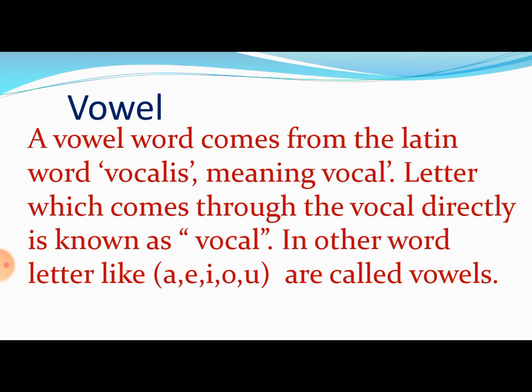In other words, letters like A, E, I, O, U are called vowels. Means, yeh sabhi letters hamare kahān se pass hote hain? Vocal se pass hote hain. Vocal matlab jisse hum Hindi mein 'gaati' bolte hain. Toh hamare jitne bhi words hamare vocal se pass hote hain, unh sabhi letters ko kya kehte hain? Vowel. Toh vowels hamare kitne hote hain? Five hote hain — first A, second E, third I, fourth O, fifth U.